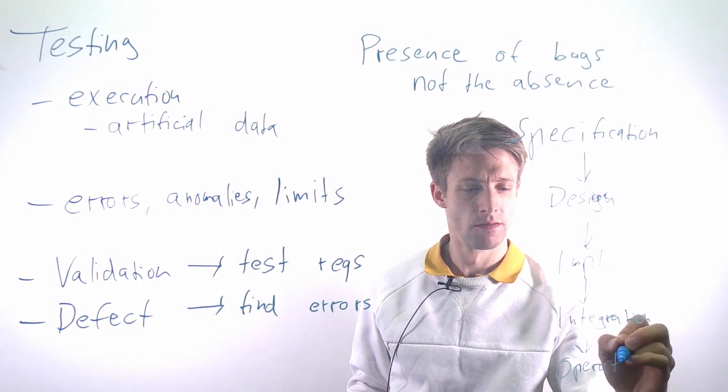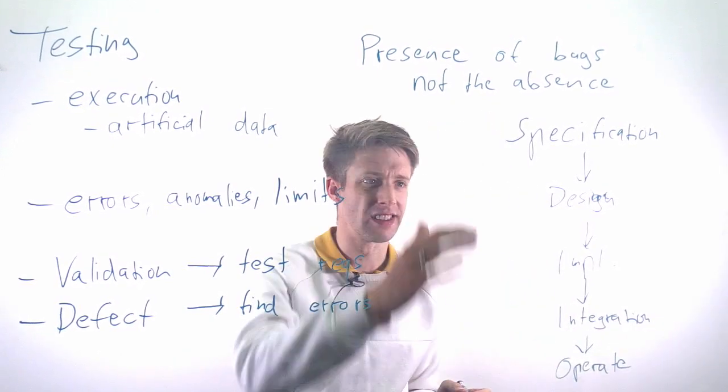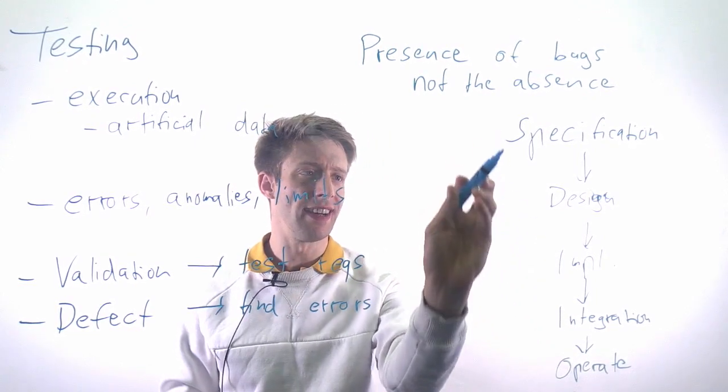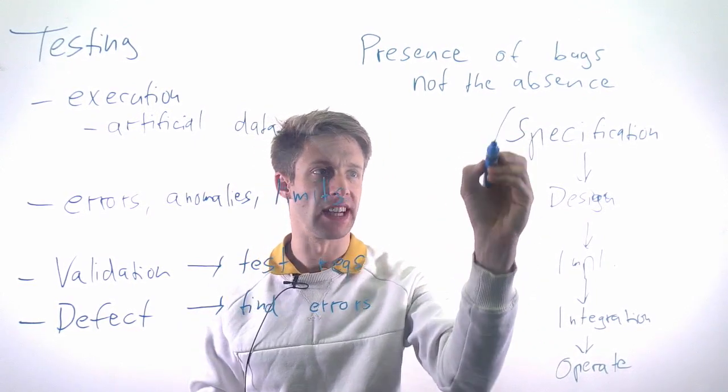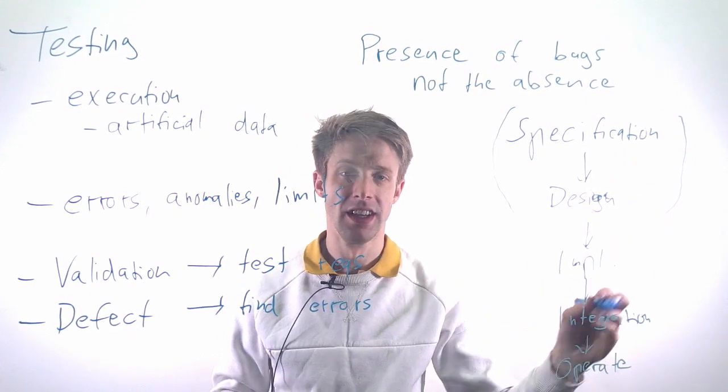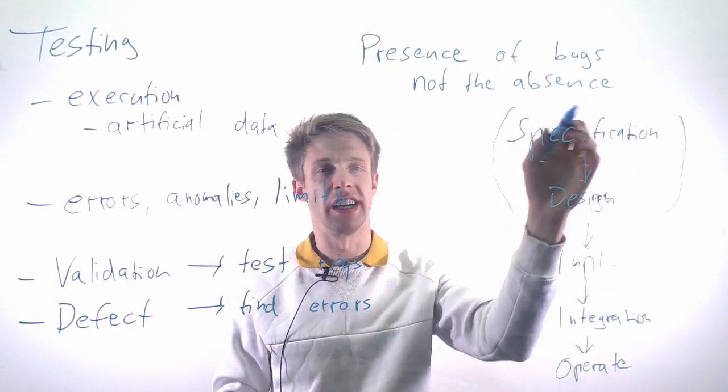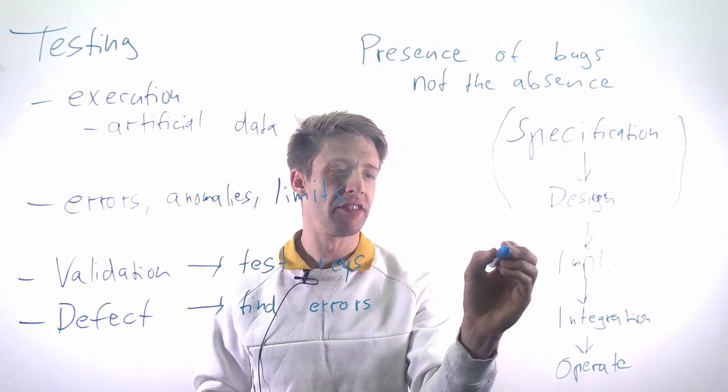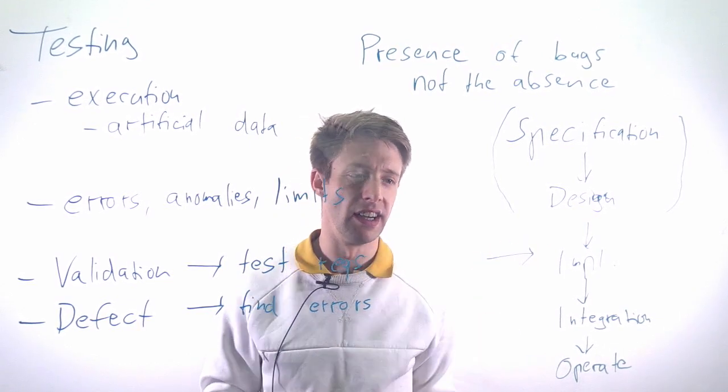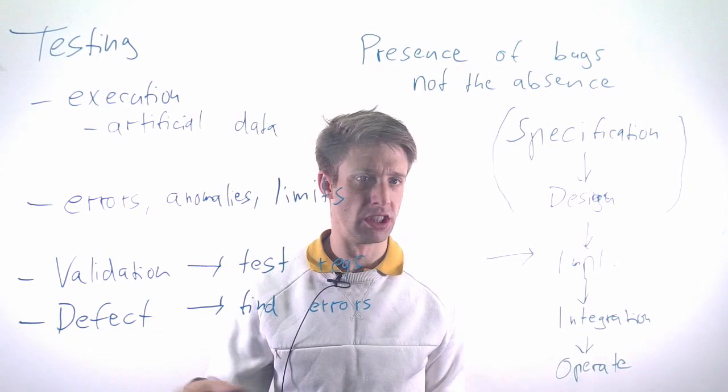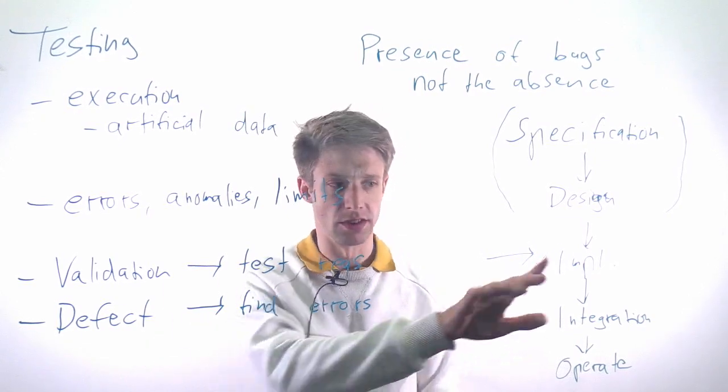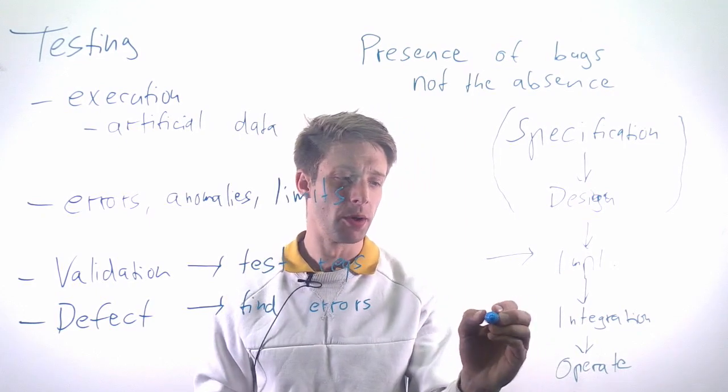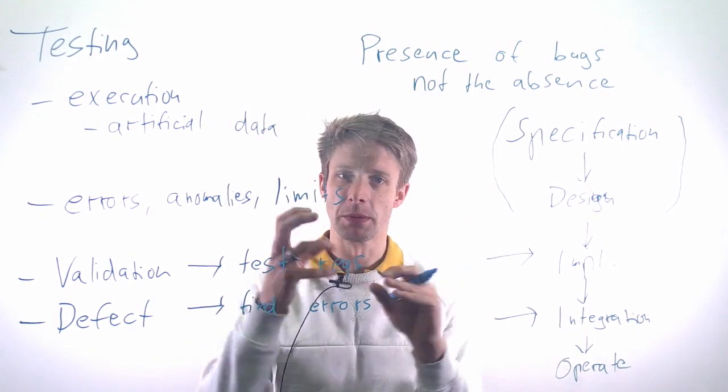You can do testing at different levels. At the specification and design level, you typically don't have anything executable, so that's more a case for inspection. But when you have implementation, you start doing testing, which is typically known as unit testing on single parts of your system.